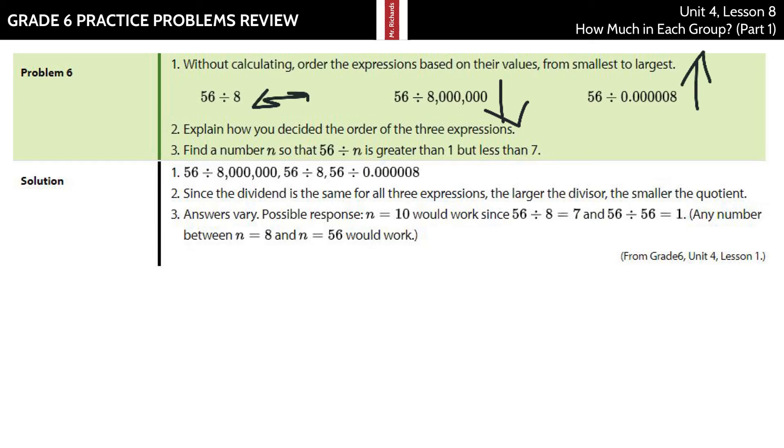And so from smallest to largest, it's going to be the 56 divided by 8 million, followed by that one in the middle, 56 divided by 8, followed by the really big number where you take 56 and divide by the really small number. And I think I got all the zeros there.